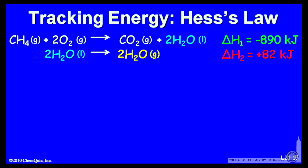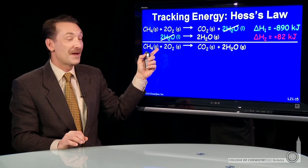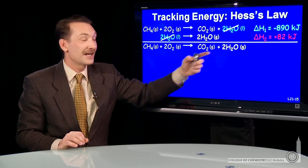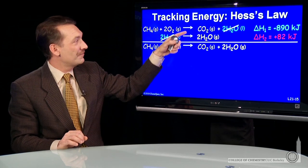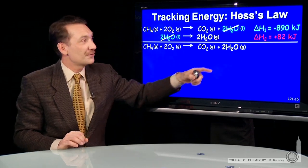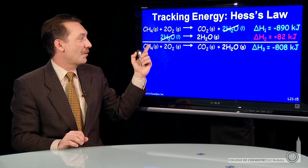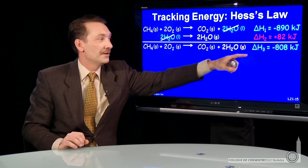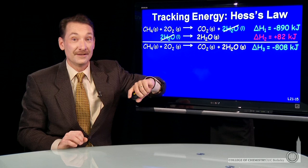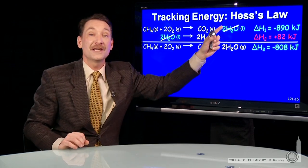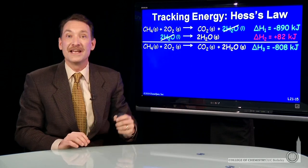So if I add these two reactions, I get another reaction where the liquid water cancels out, and I have the burning of methane to produce carbon dioxide and gaseous water. It's the sum of these two reactions, so I can take the sum of these two enthalpies to get the enthalpy for this third reaction. Turns out to be -808 kilojoules. So burning methane to produce gaseous water releases less energy than burning methane to produce liquid water by about 80 kilojoules.